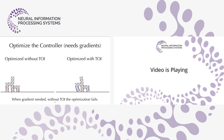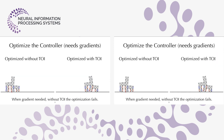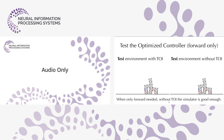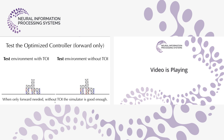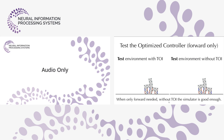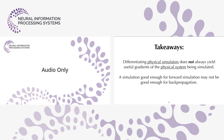The visual comparison confirms: without TOI the robot doesn't move at all. Interestingly, if we use TOI for training but disable it for testing, the robots still work. The key takeaway: a simulation good enough for forward simulation may not be good enough for back-propagation. Differentiating physical simulators does not always yield useful gradients of the physical system being simulated.